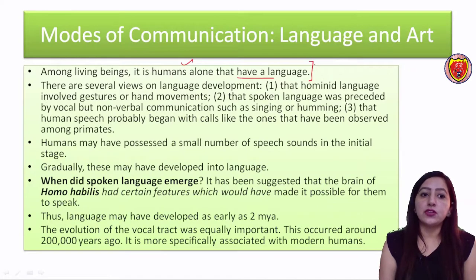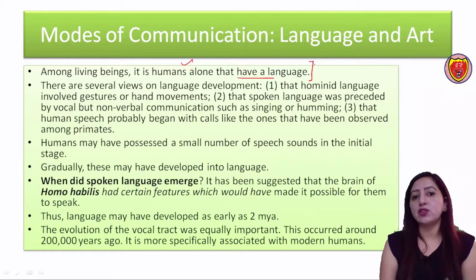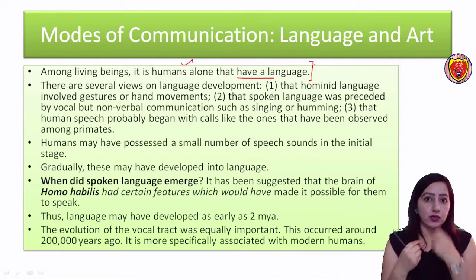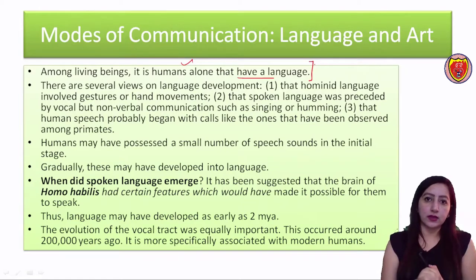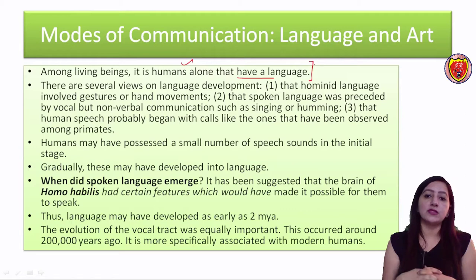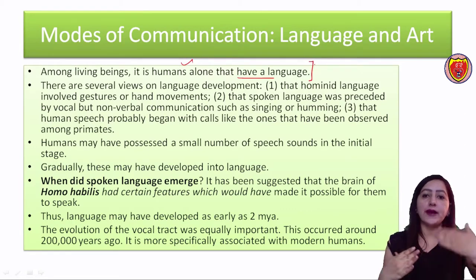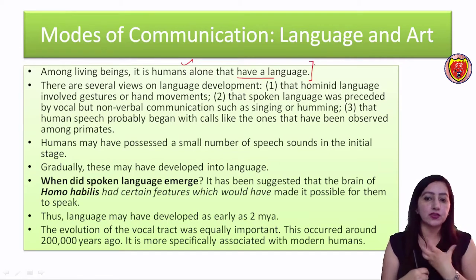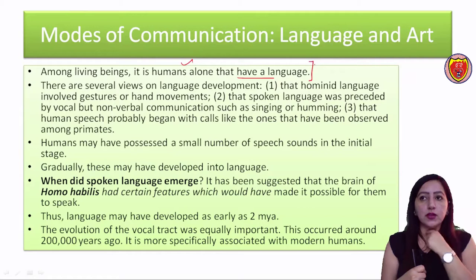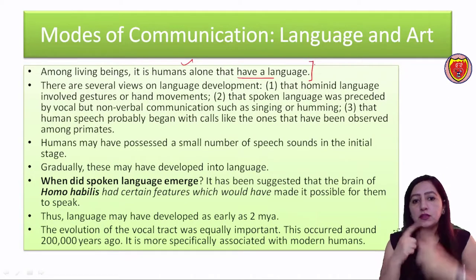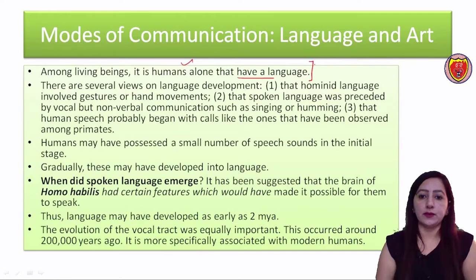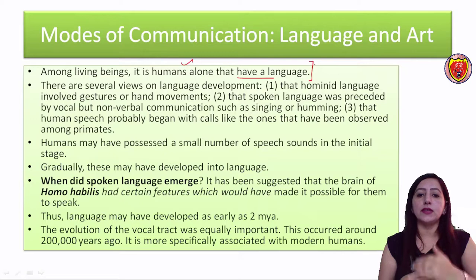Archaeologists suggest that hominid language involved gestures and hand movements. The early human beings - their language was just gestures, face gestures, or hand movements, and they communicated through them. The spoken language was preceded by vocal but non-verbal communication such as singing and humming. Before spoken language was developed, it was just humming - like releasing voice or music. So singing and humming developed first, and the actual spoken words developed later.